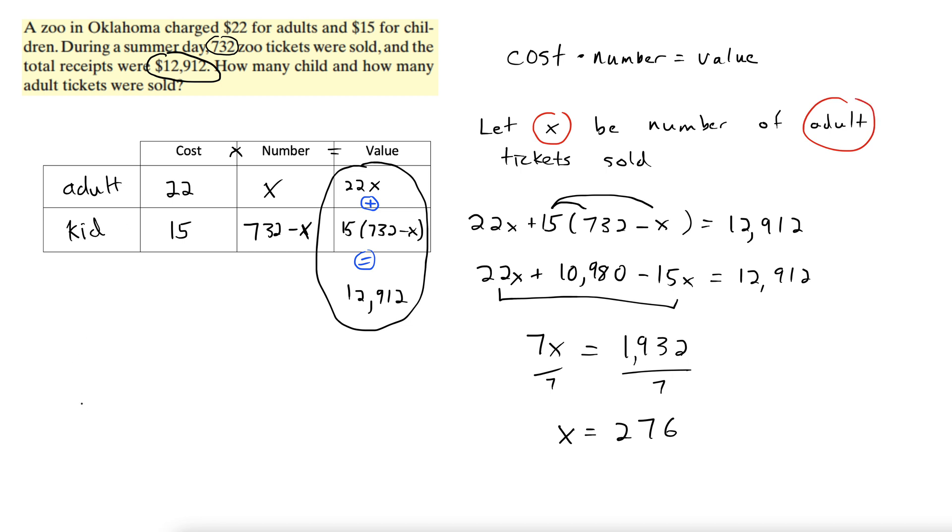So let's do that. Adult: 276 tickets. Children's tickets. Let's see. Well, going back to the table, right, the kid tickets, the number is 732 minus x.